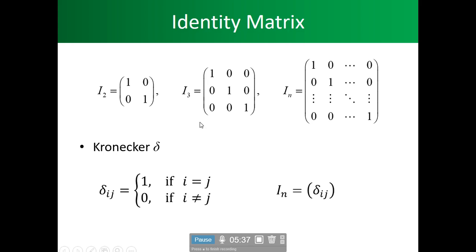The Kronecker delta δ_ij will take on one value — it will only take a 1 at the diagonals, so that's only when i equals j. As you can see: (1,1), (2,2), (3,3) and all the way to (n,n). That's what the identity matrix is.